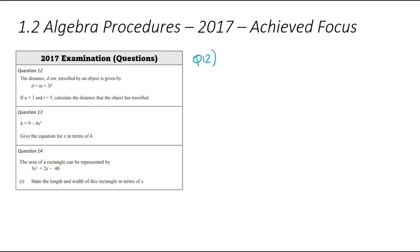Question number 12, the distance, which is the d in the equation below, travelled by an object is given by this particular equation. If u is equal to 3, t is equal to 5, calculate the distance that the object has travelled.